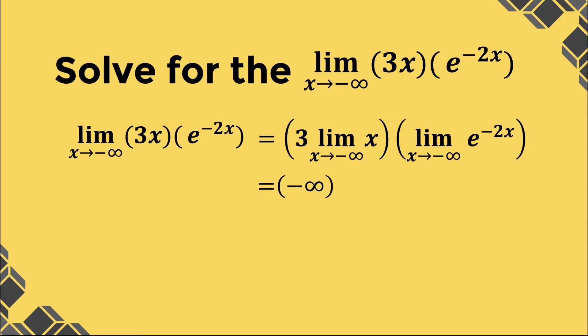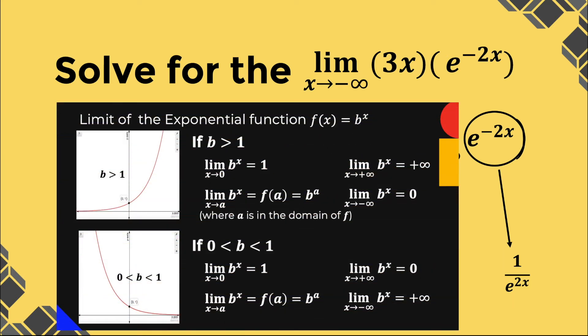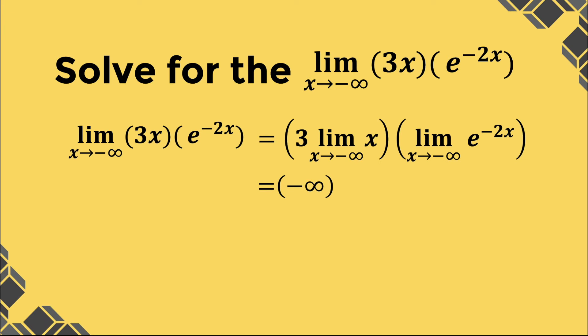The number gets smaller and smaller. For e raised to negative 2x, this is also equivalent to 1 over e raised to 2x. The limit whenever the base is between 0 and 1 as x approaches negative infinity is equal to positive infinity. Therefore, we have negative infinity times positive infinity, which is equal to negative infinity.